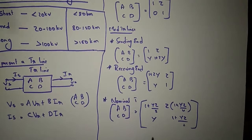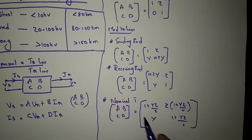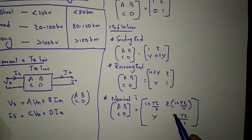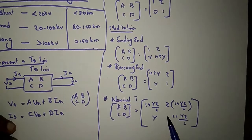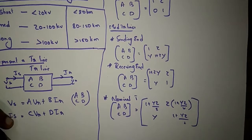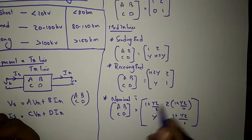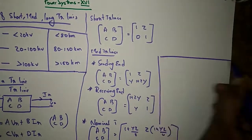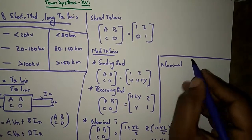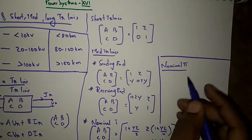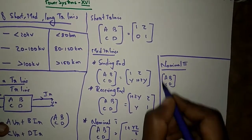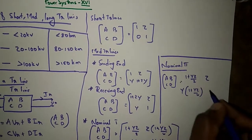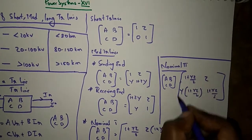These formulas are very important for examinations. Questions may be asked like: what is the value of B for the nominal T method? The answer is B = Z(1 + YZ/4). For nominal pi, the ABCD values are: A = 1 + YZ/2, B = Z, C = Y(1 + YZ/4), D = 1 + YZ/2. Please make a screenshot of these formulas and review them carefully.